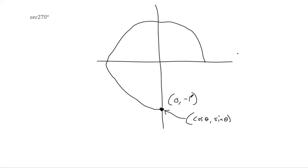So sine is negative 1 and cosine would be 0 for 270 degrees. But the whole point is to say what secant is. Just use the fact that secant is the reciprocal of cosine.